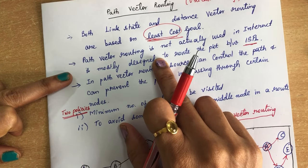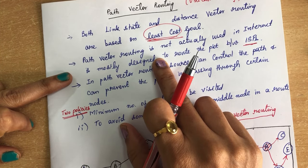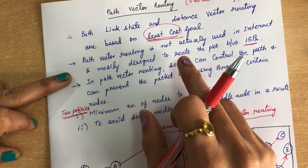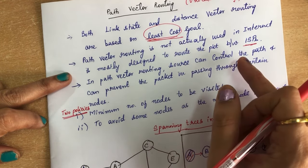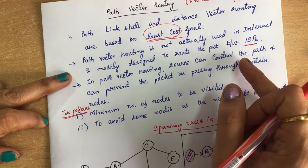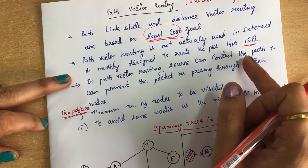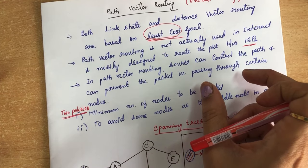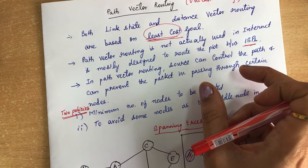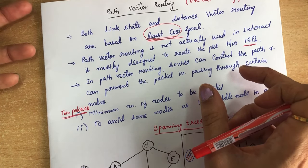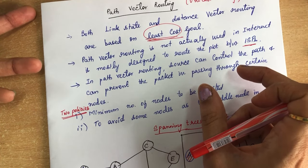Path vector routing is not usually used within the internet, but it can be used for routing packets between internet service providers. So if you want to route packets between internet service providers, you can make use of path vector routing for that.